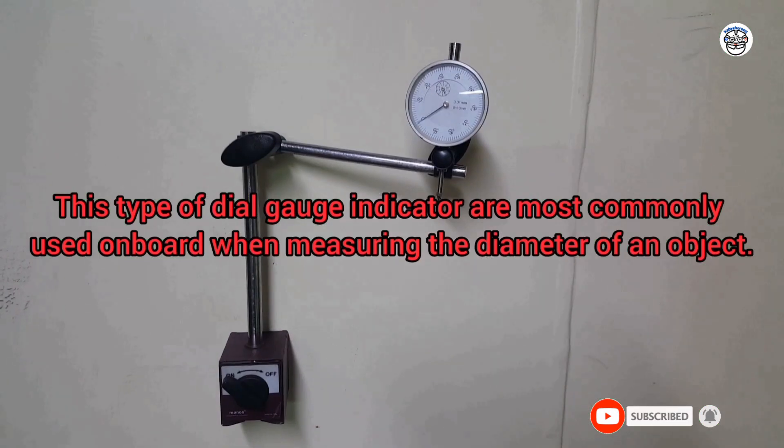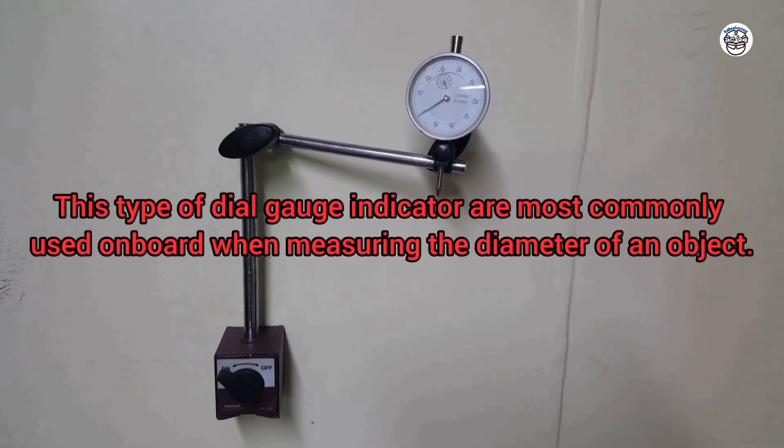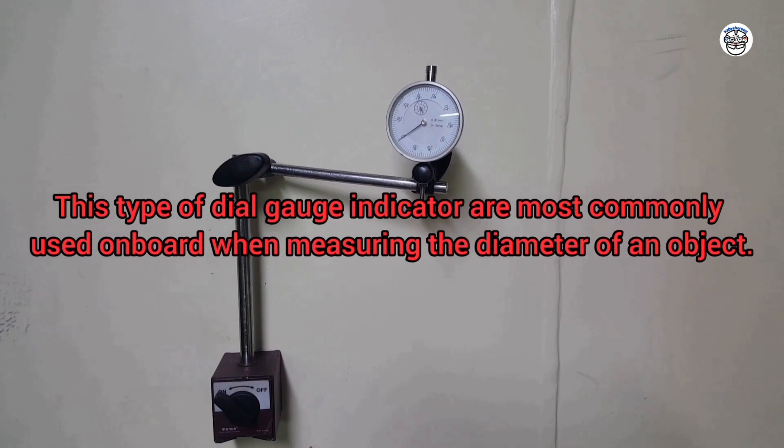This type of dial gauge indicator is most commonly used on board when measuring the diameter of an object.